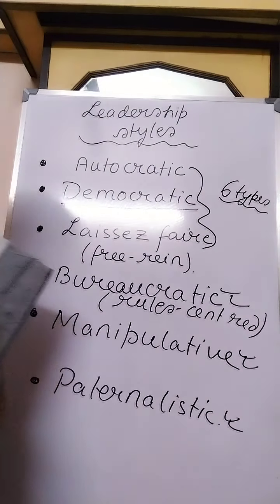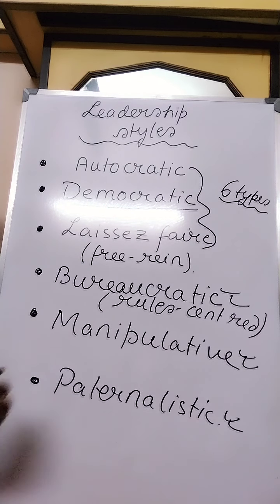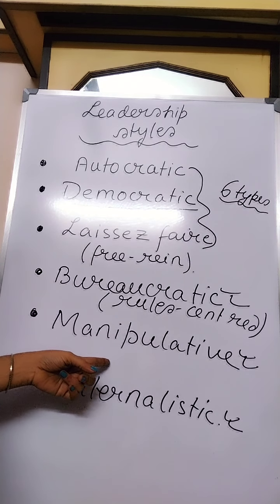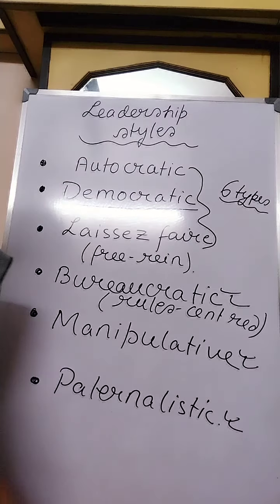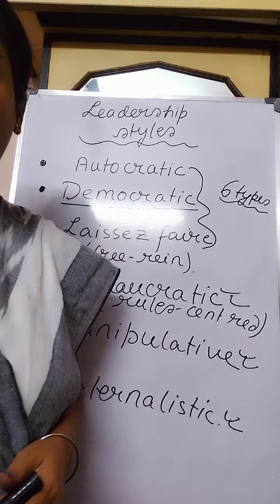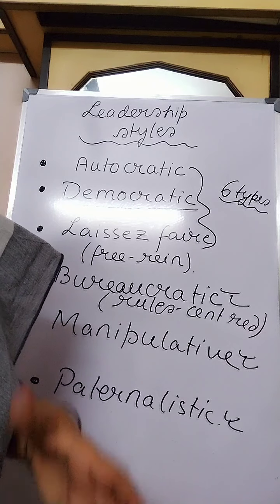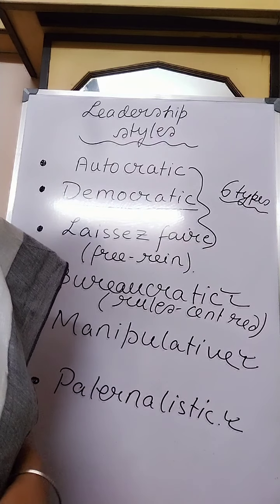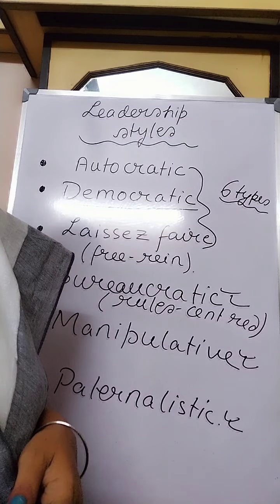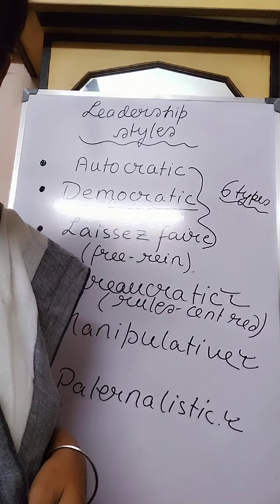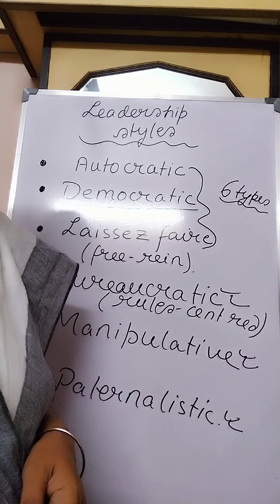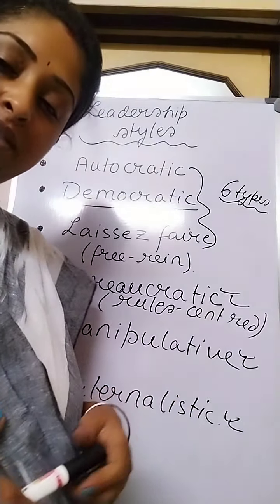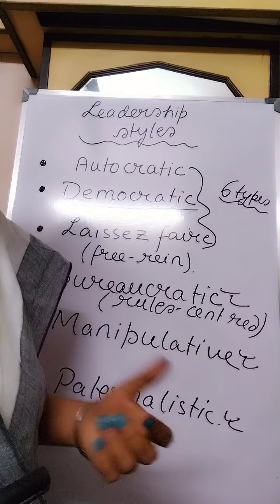Next comes the Manipulative Style. This style is based on the belief that employees are manipulated by the leader to attain organizational goals. A manipulative leader is sensitive about the needs and desires of the employees. However, employees are normally resentful because they know they are being manipulated, and as a result a feeling of distrust arises, which becomes evident from this leadership style.